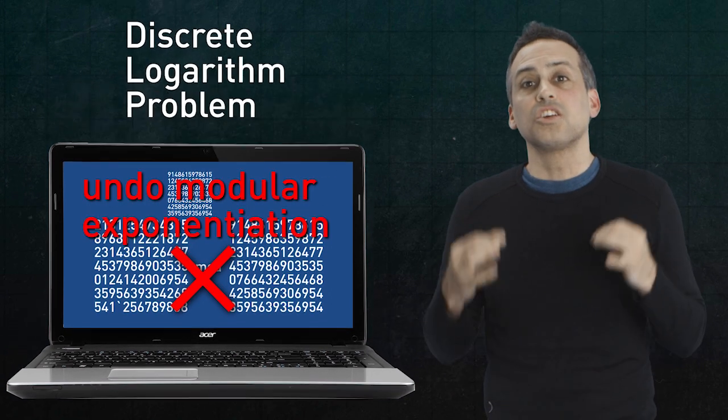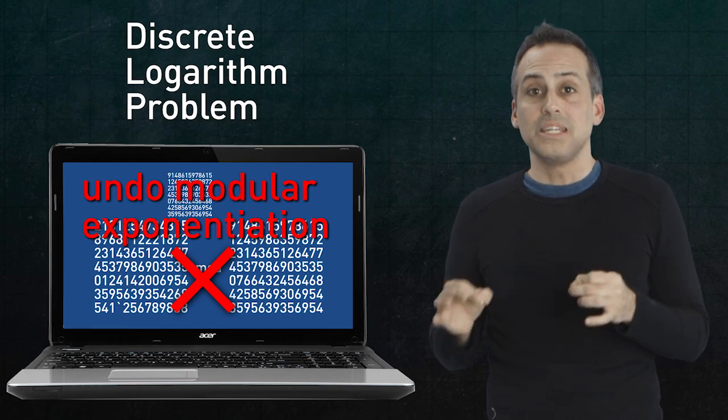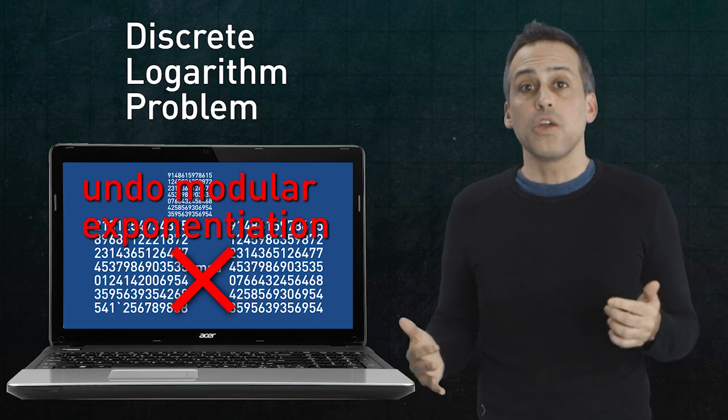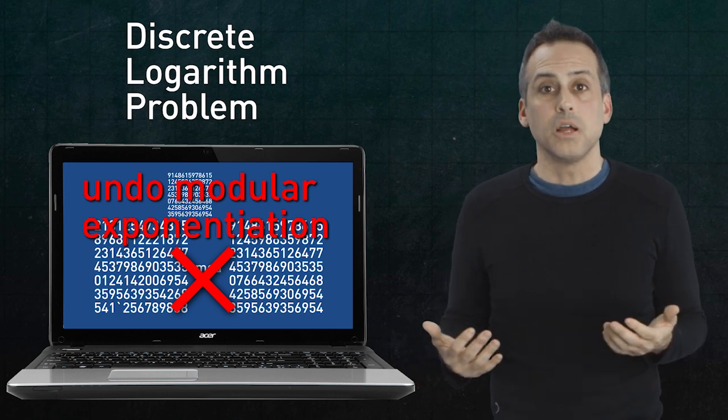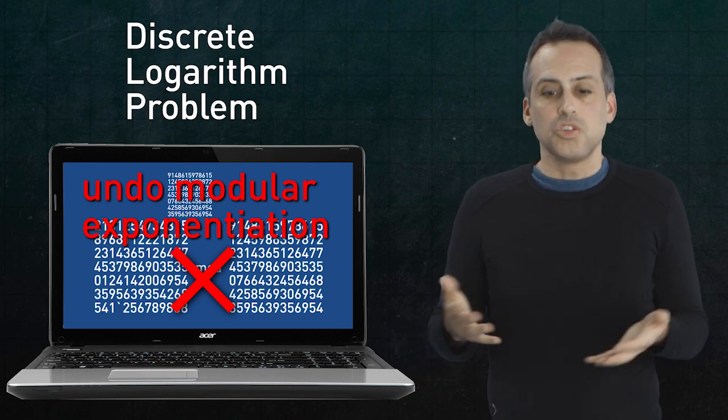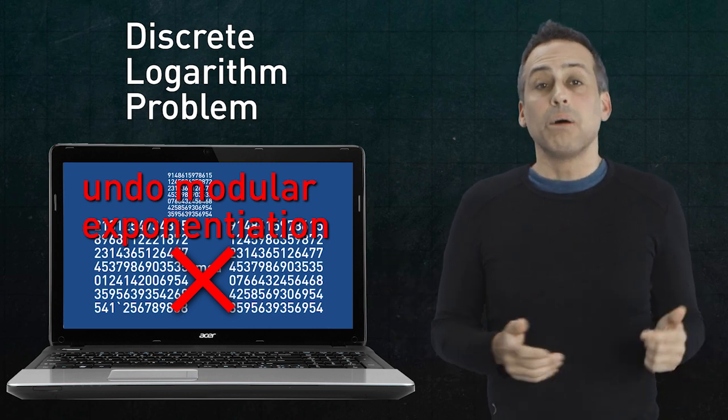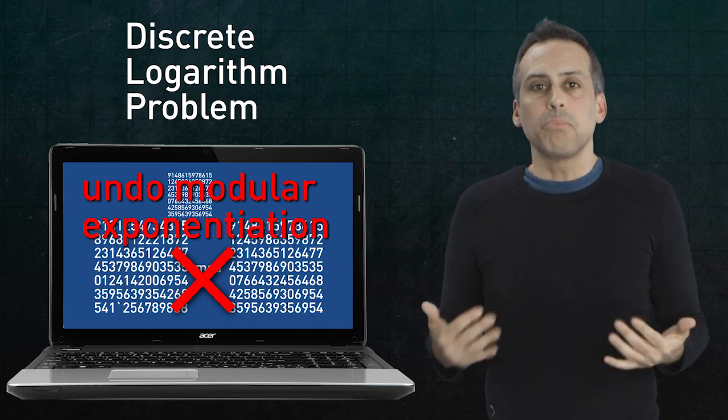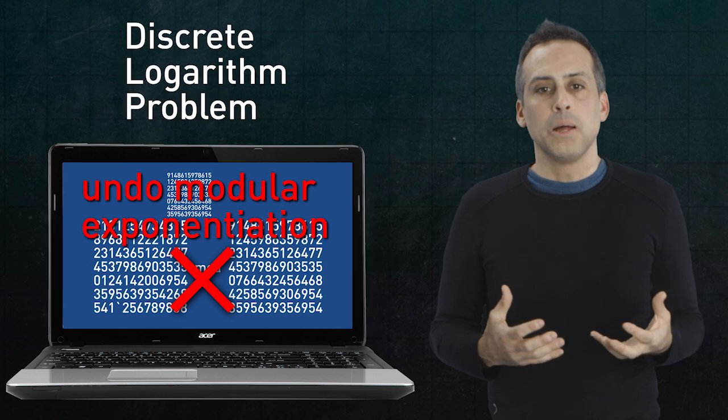That inverse problem is called the discrete logarithm problem, or the DLP. And it's much harder than the ordinary logs you do on your calculator. There are better algorithms than just listing powers of the generator. But even those rely on pre-computing some sort of lookup tables. And here's the thing,